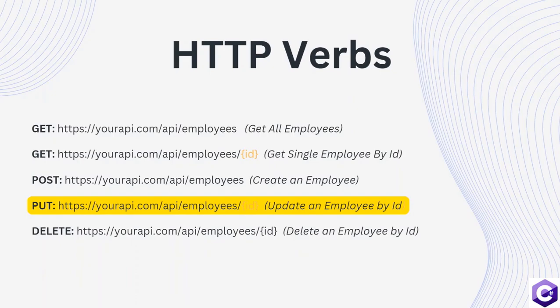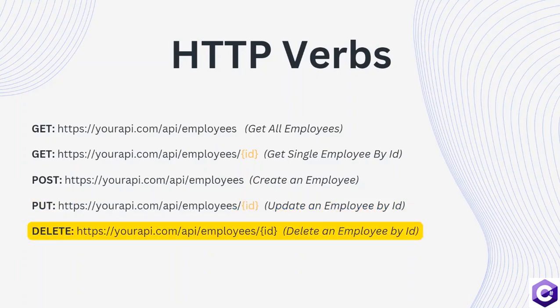After that, we have the PUT HTTP verb, which is used to update a resource. Similar to GET by ID, we first use a URI that uniquely identifies a single employee, then use the HTTP PUT verb to treat this as an update action. And finally, DELETE is also a common HTTP verb, where the URL convention points to a single resource and the HTTP DELETE verb identifies this as a delete action.